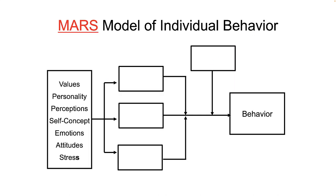This is the MARS model of individual behavior that lays out much of what goes on in organizational behavior at the micro level of analysis — that is, at the individual level which focuses on individual differences. In the far right box, we see behavior, which when construed as job performance is the ultimate DV in OB at the micro level. The MARS model has multiple IVs, multiple mediators, one moderator, and one DV. In the far left box, we have individual differences such as values, personality, perceptions, self-concept, emotions, attitudes, and stress.